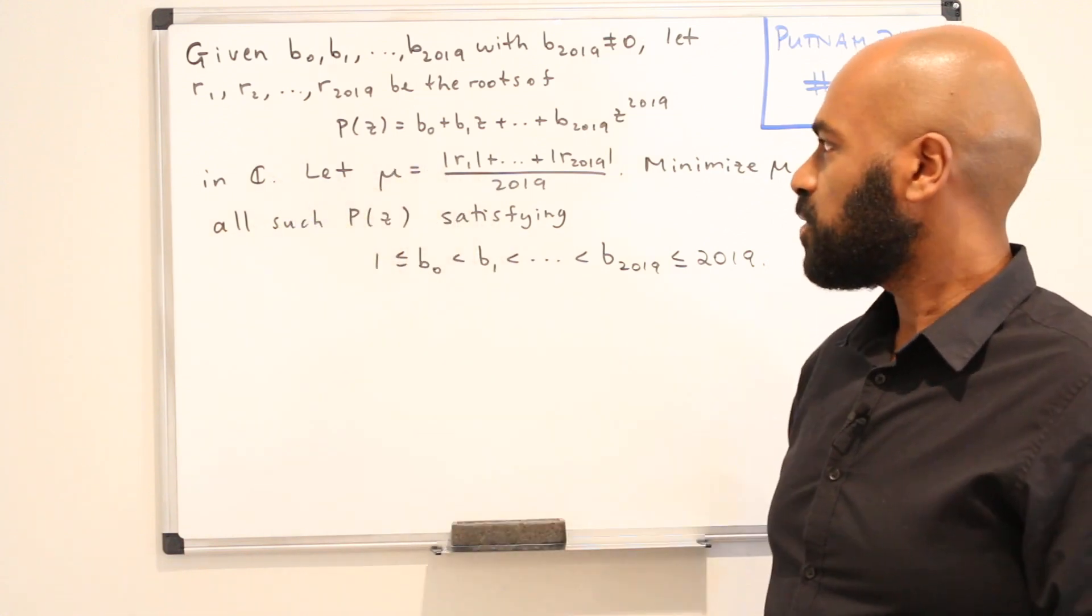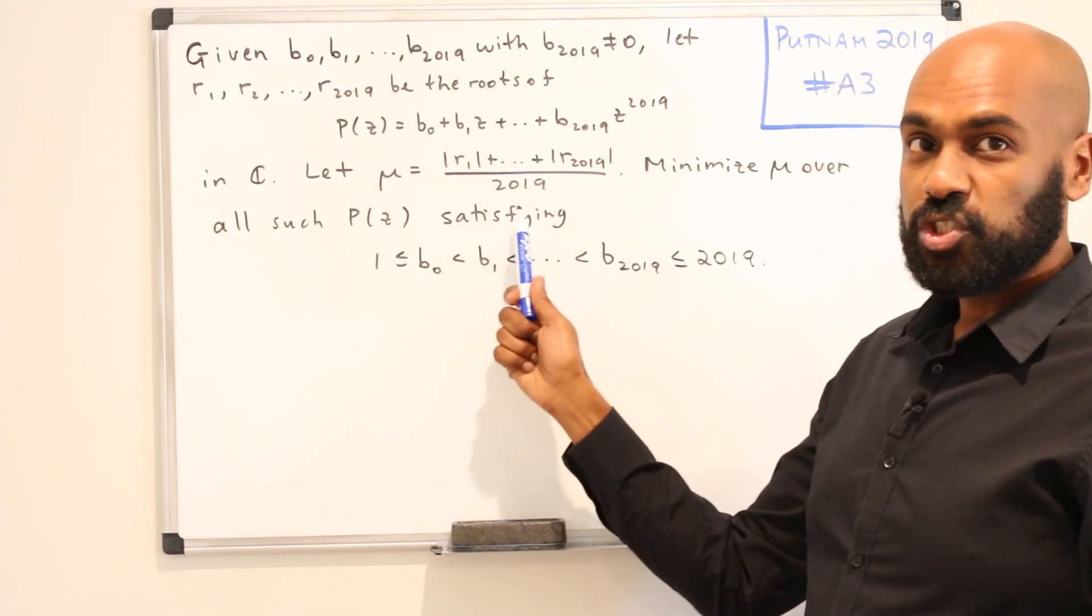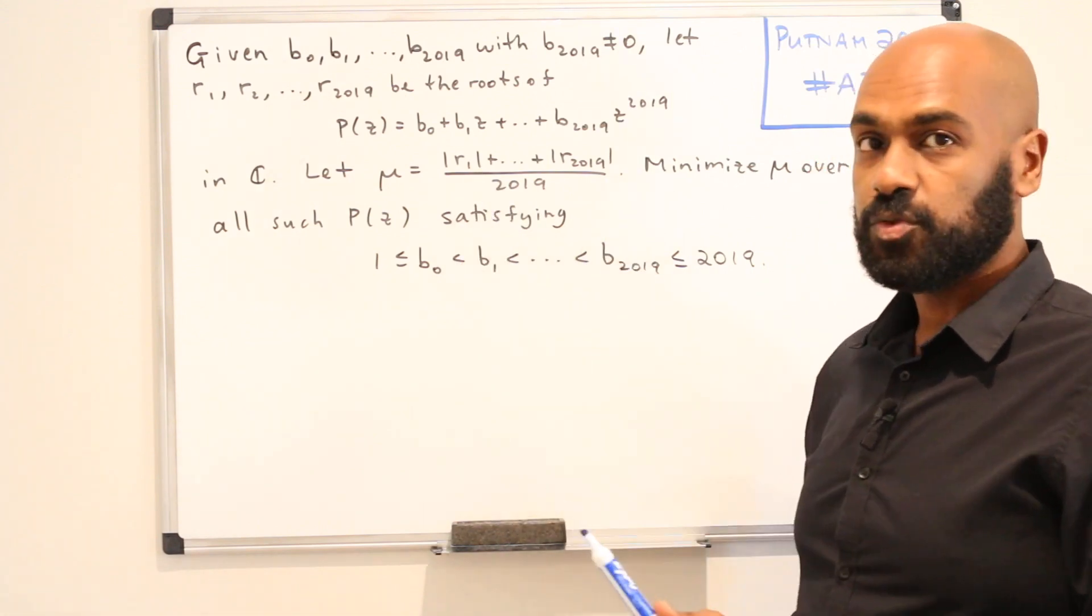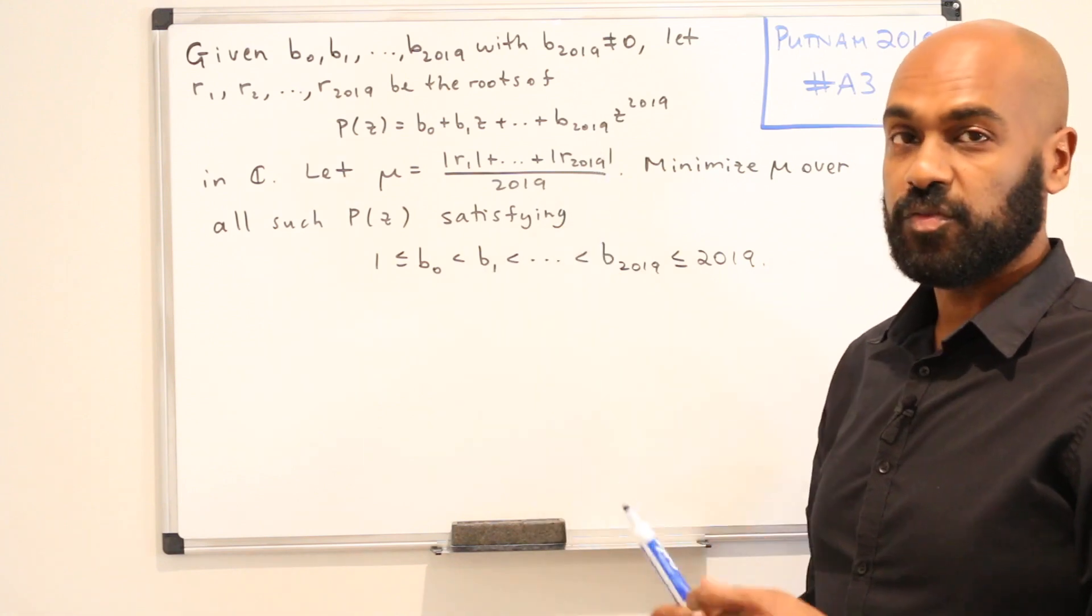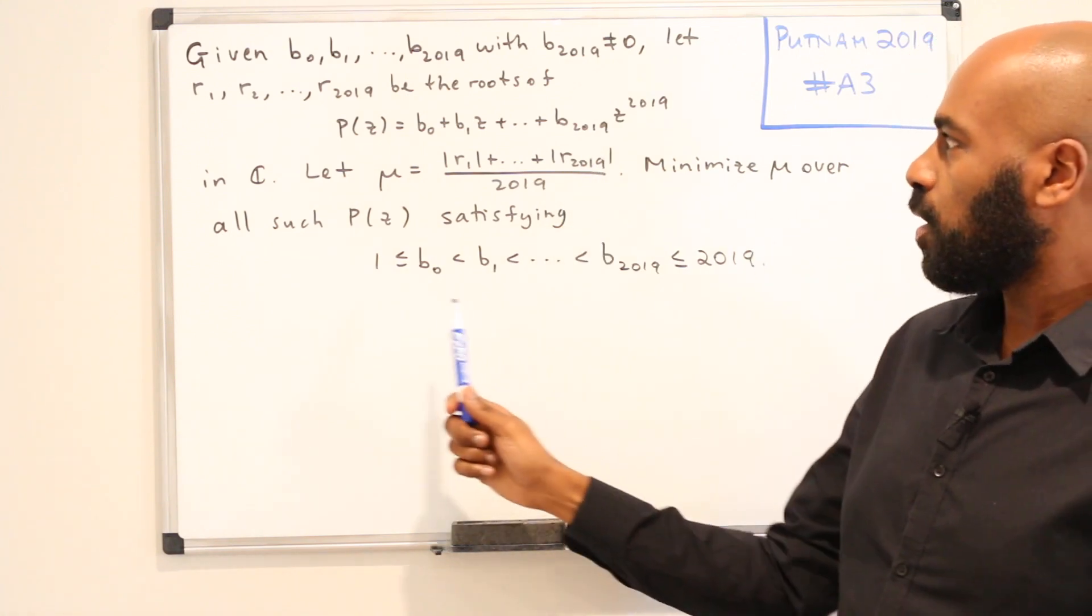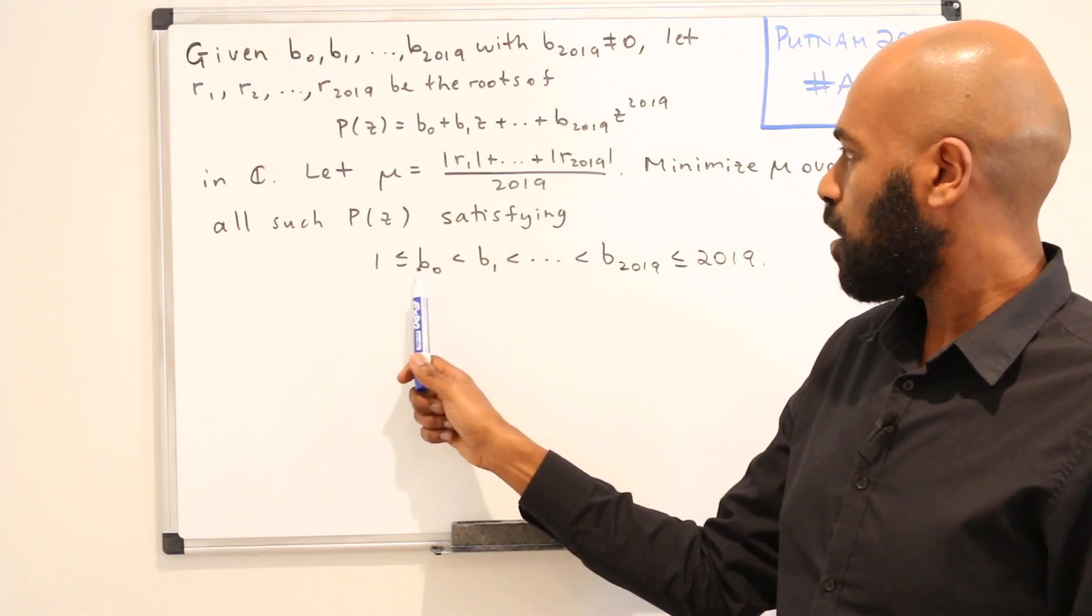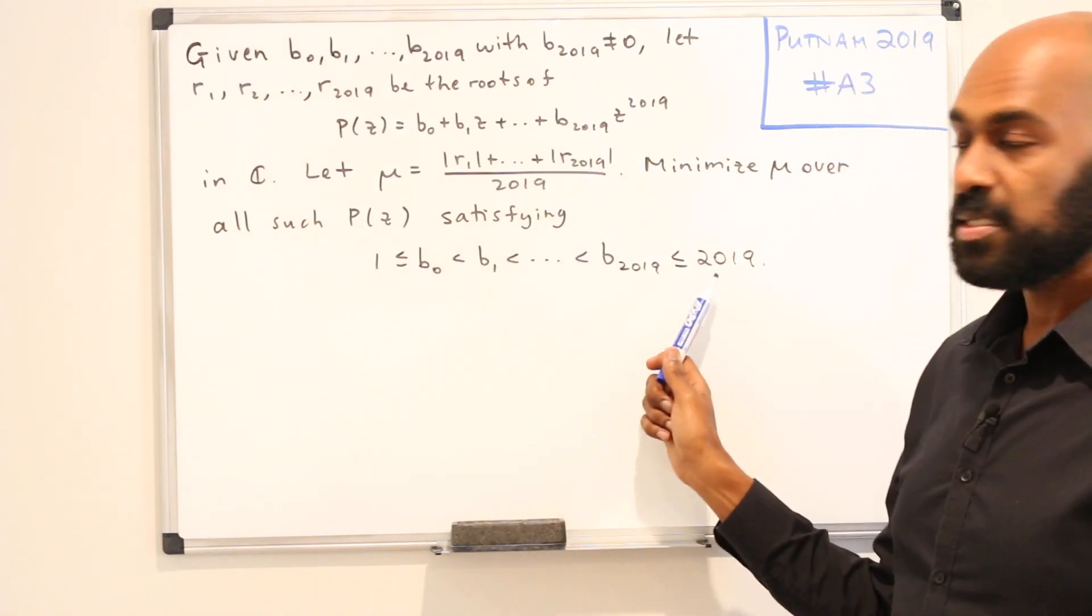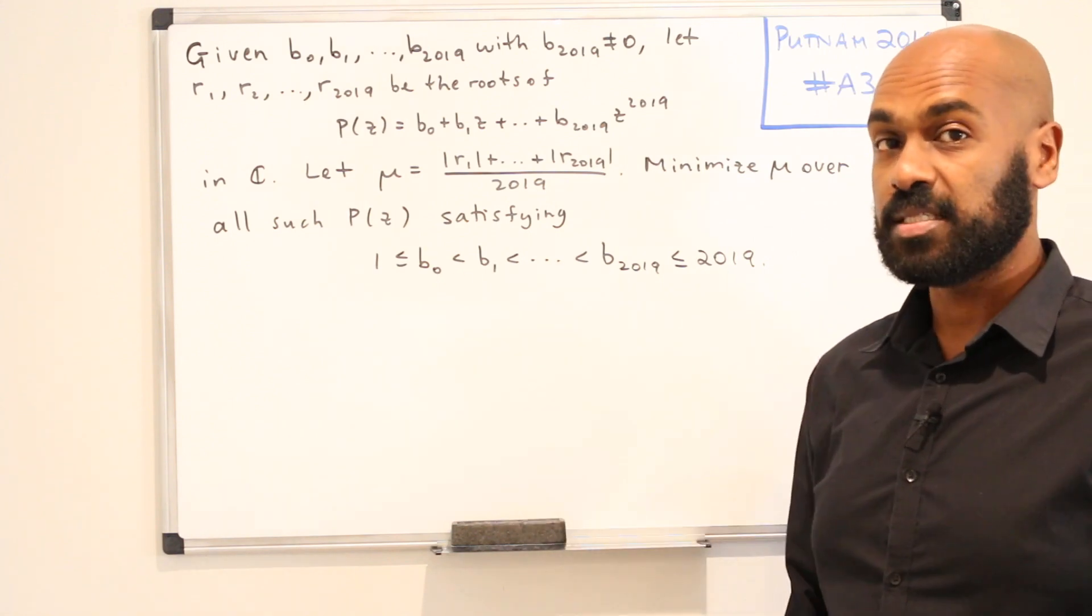All these roots are in the complex numbers. We're gonna let mu be the average of the moduli of these roots, or in other words the average of the distance of each of the roots from the origin. The question is to minimize mu over all polynomials like this where the coefficients are between 1 and 2019 and increase from B0 through B2019.